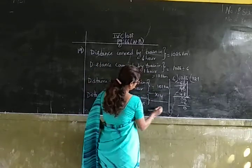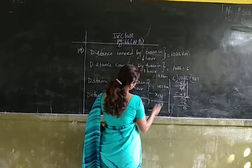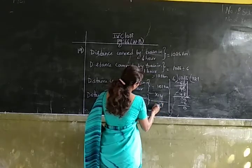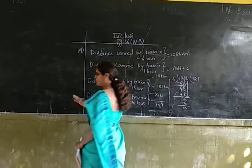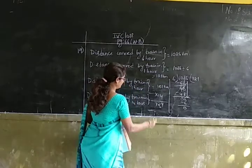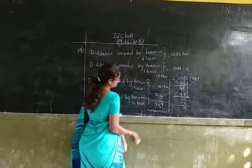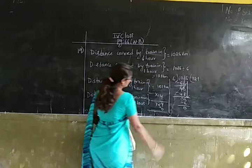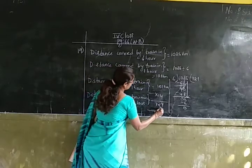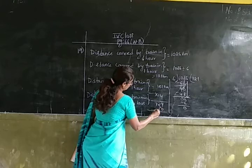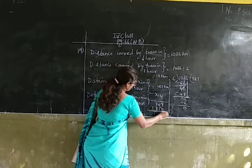4 ones are 4. 4 eights are 32. 4 ones are 4. Now 1 is in the tens place, so put 0 in the ones place. 1 one is 1. 1 eight is 8. 1 one is 1.